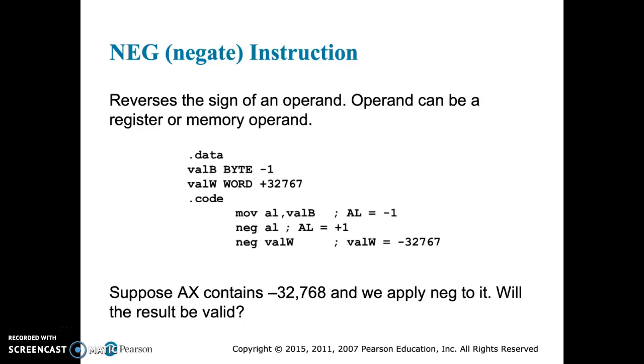The resulting value will be the new value. So we can see a few examples here. We have a move of our value B, which is a value of negative 1, to our AL register. We negate it, and it changes it to a plus 1 value.